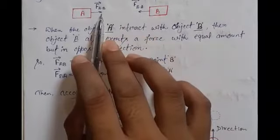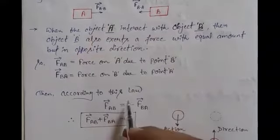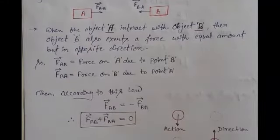Woh object A per work karti hai. Okay, then according to this law, F_AB is equal to minus F_BA.